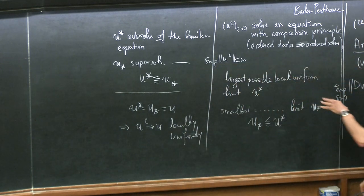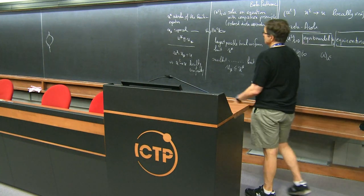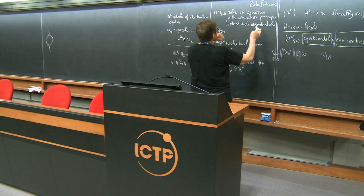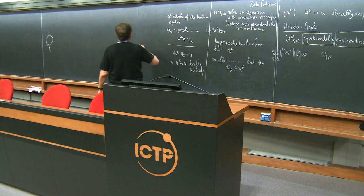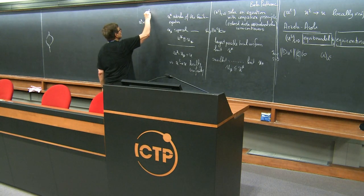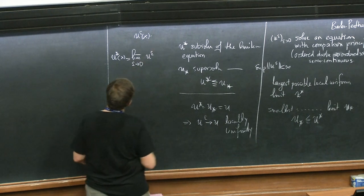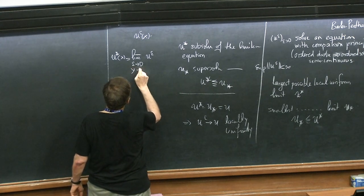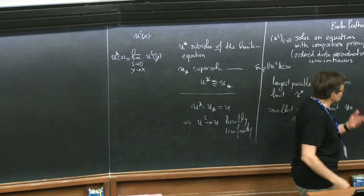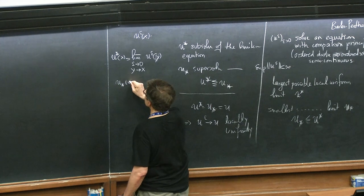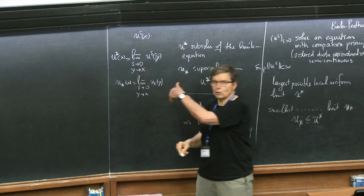At least when you are dealing with solutions in L-infinity that have a weak maximum principle, you can bypass the need for Lipschitz continuity by using this approach. The definition of u upper star at x is the lim sup as epsilon goes to zero and y goes to x of u epsilon of y — and similarly for lim inf. You need to take a little care to explain why this thing is independent of the order you take the limits, but it looks very much like a gamma limit.